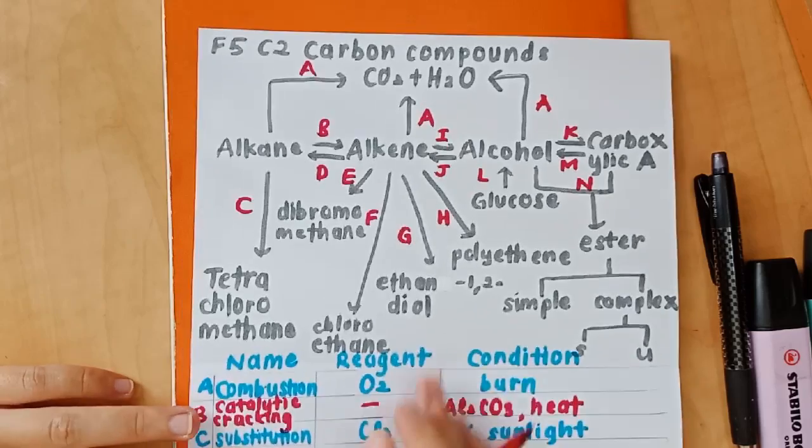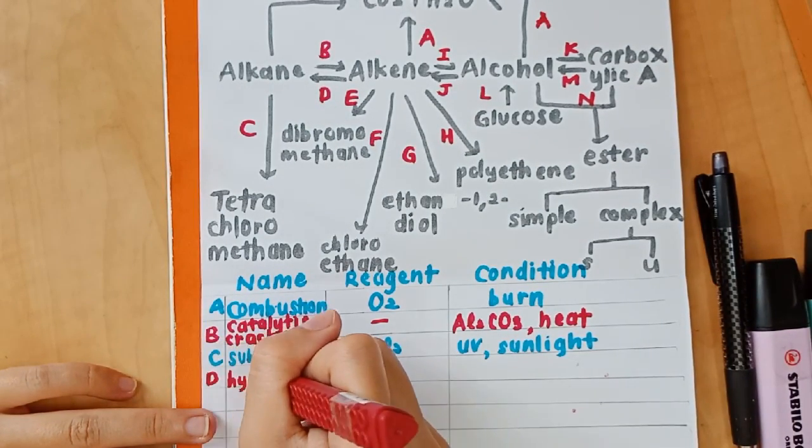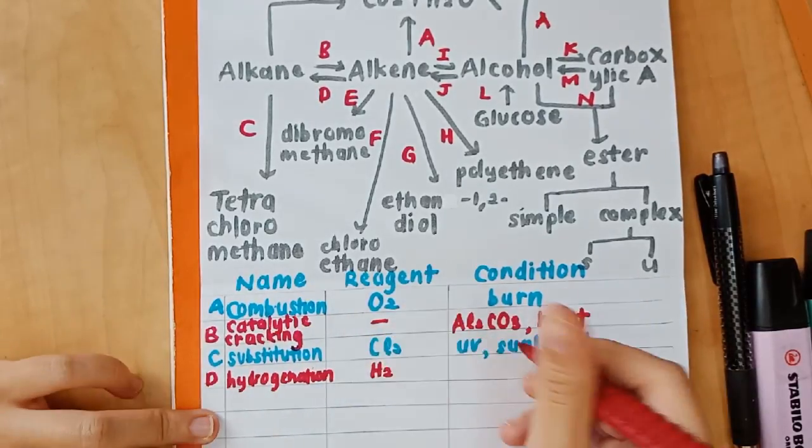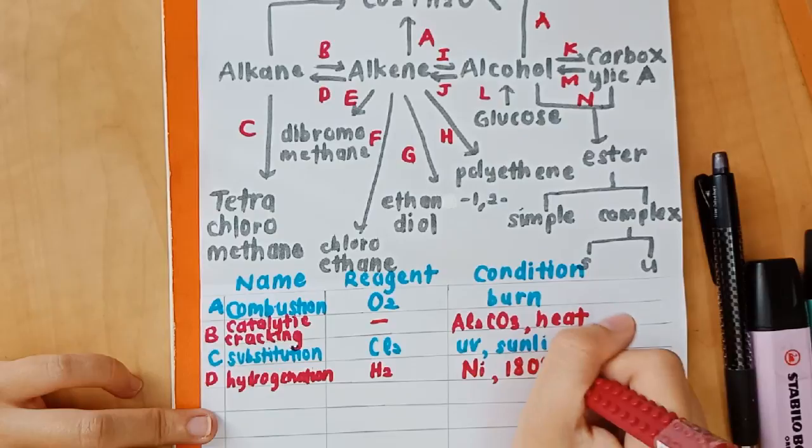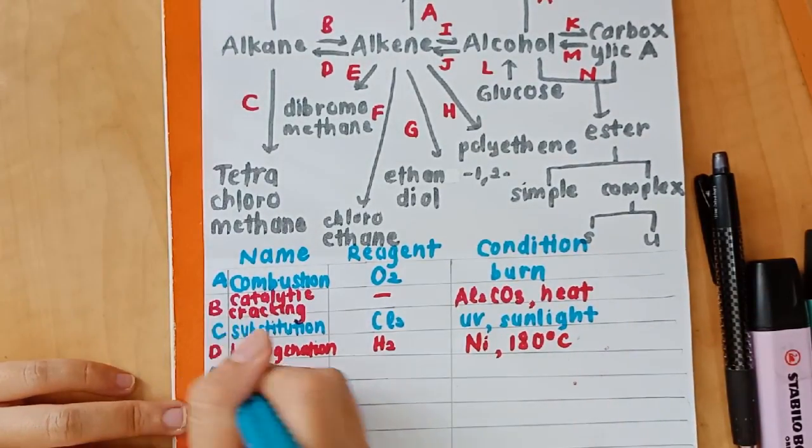And then we'll proceed with D. Alkene to alkane. We need hydrogenation. The addition of H2. So naturally, the reagent used is H2. The conditions are important. Nickel and 180 degrees Celsius.